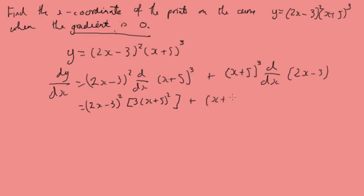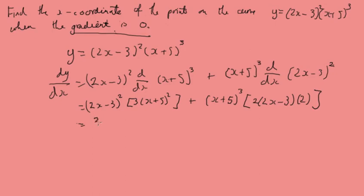Plus, applying the chain rule again, which gives a factor of 2: (2x minus 3) to the power 1 — the 2 becomes a 1 — and then the derivative of the internal bit is just 2. Tidying up, we get 3(2x minus 3) squared times (x plus 5) squared, plus 4(2x minus 3) times (x plus 5) cubed.